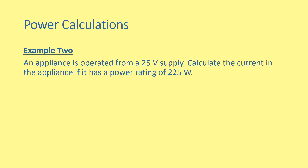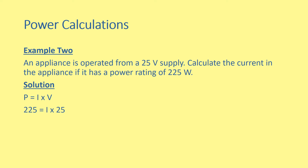Example 2: an appliance is operated at 25 volts. Calculate the current in the appliance if it has a power rating of 225 watts. This requires some rearranging. Following basic physics principles will maximise marks: one mark for writing P equals IV, one mark for substituting the values correctly — 225 equals current multiplied by 25 — and a final mark for correct rearrangement: current equals 225 divided by 25, which is 9 amperes.